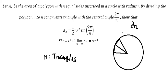That means the angle should be divided by n, so this angle in here should be 2π over n.